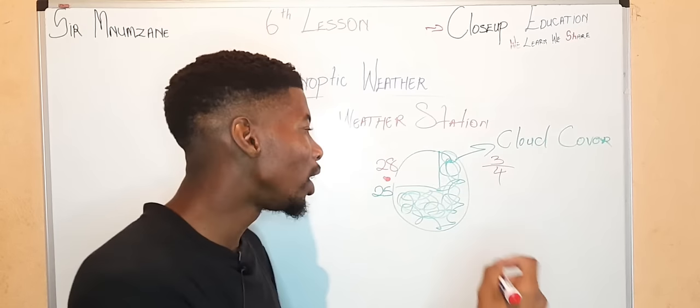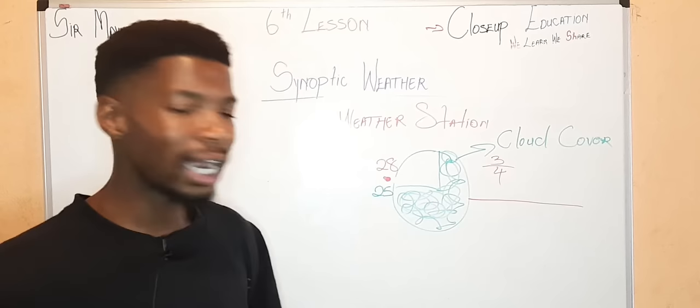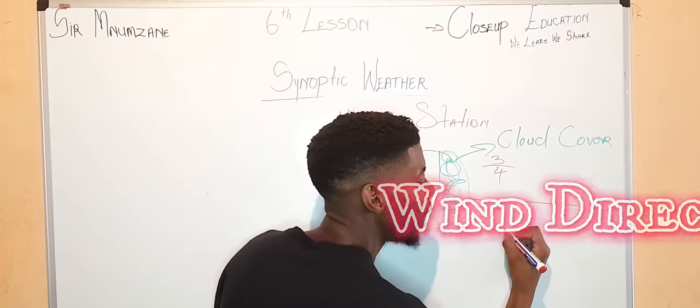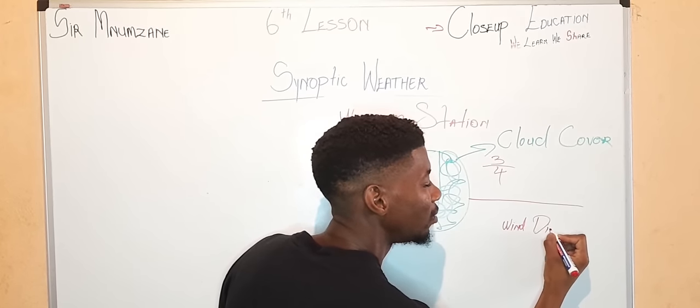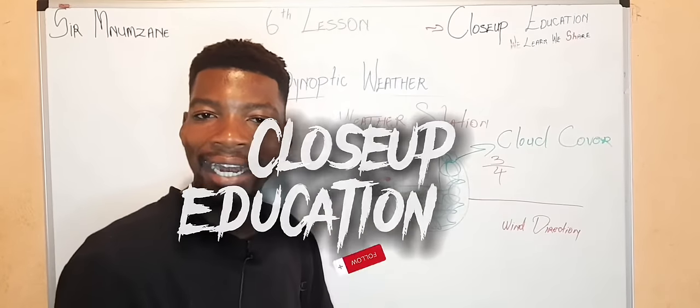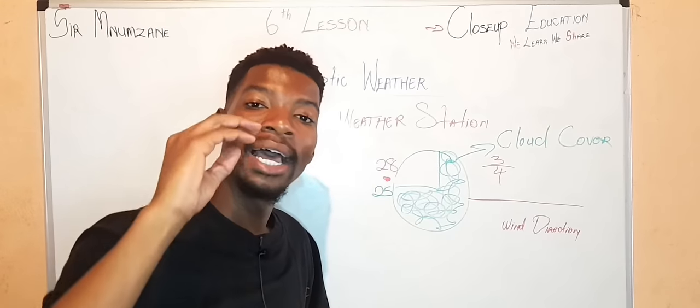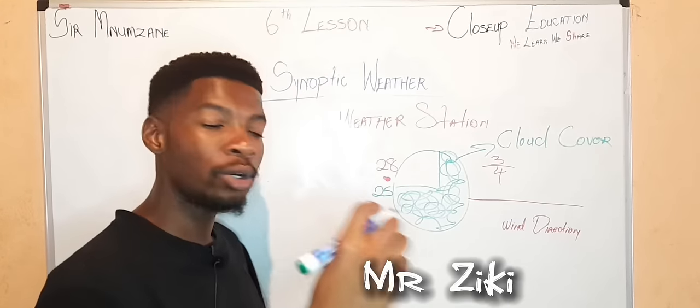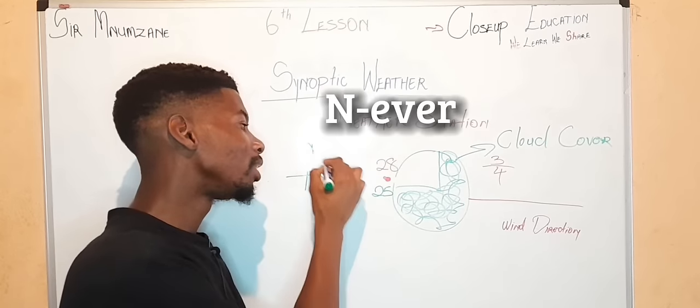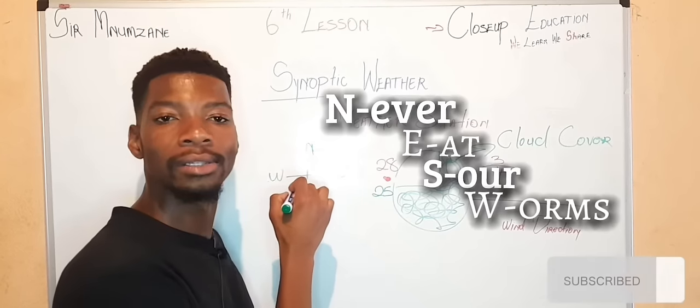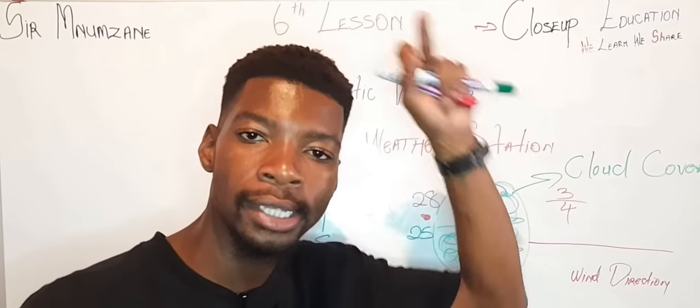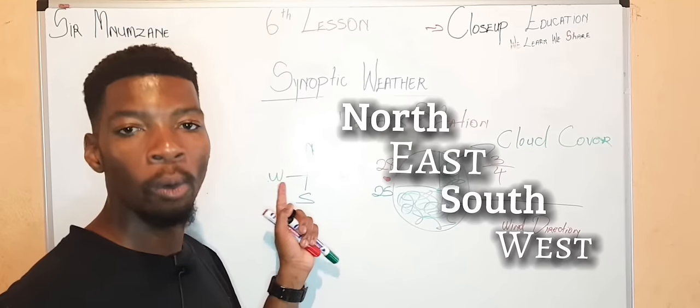We are not yet done drawing our weather station model. The weather station model also has a line. This line represents the wind direction. Let's write it down. The wind direction. In order to understand any directions, you will have to always remember what I'm about to tell you. This is what my mentor used to tell me. He used to draw a cross first and say, Never eat sour worms. Never eat sour worms. You will never ever get your directions wrong. Never eat sour worms.